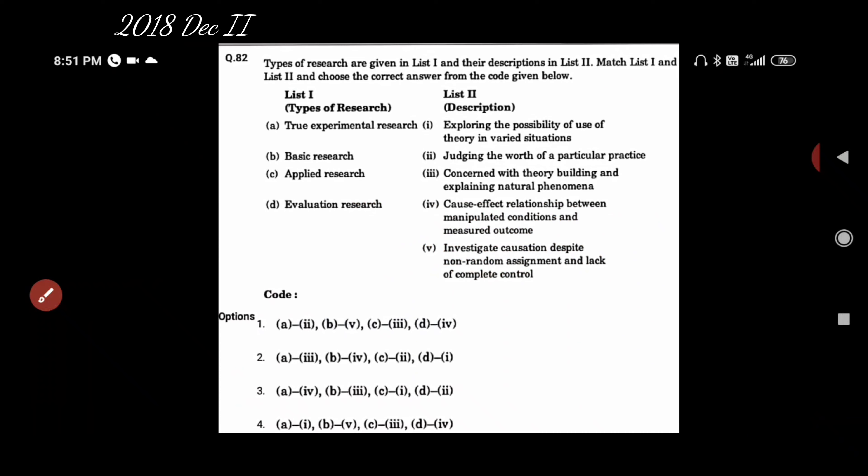We have match the following: types of research with their description. We'll pick out the easiest one. Let's go with the basic research - we'll have to look for theory building. Basic research is three: concerned with theory building. Applied research is one: exploring the possibility of use of theory in variety situations. Evaluation research: judging the worth of a particular practice. And true experimental research is cause-effect relationship. So our answer is three.